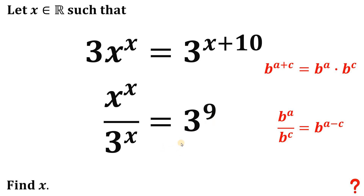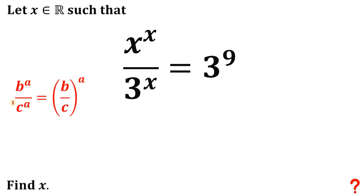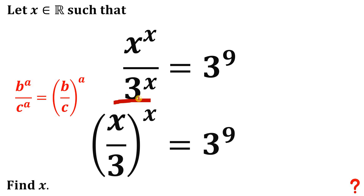Let's focus on this result. Another law of exponents when we have the same exponent: if we have b raised to the power of a over c raised to the power of a, we have the same exponent a, so we can pull out the exponent and divide their bases — giving us b over c raised to the power of a. So the left-hand side can be rewritten as x over 3, raised to the power of x.